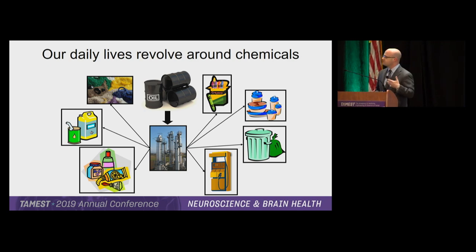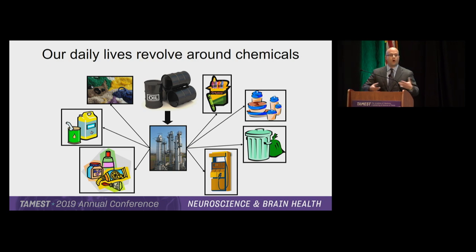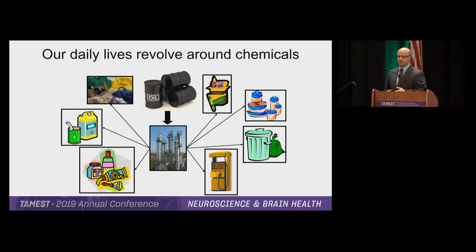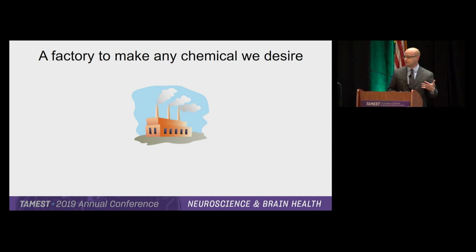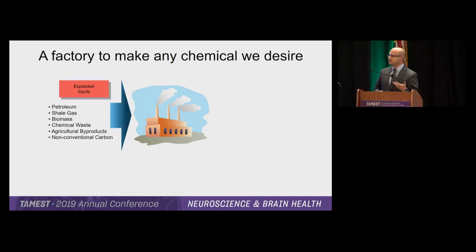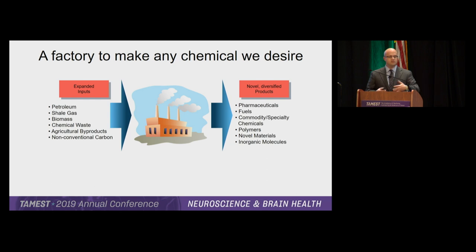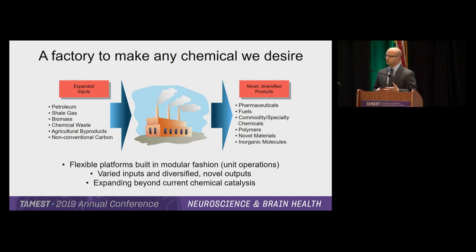Oil and gas has a really large footprint on nearly all the things that we have within our daily lives. And the general central premise of the field of chemical engineering is this idea that we can actually take these petroleum products, or any type of carbon source, and convert that into a product of interest — looking at an expanded range of inputs for our chemical process.